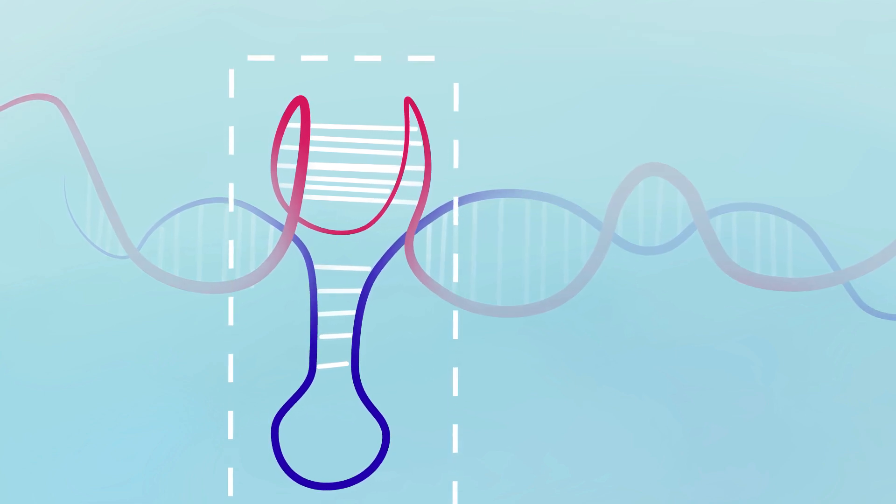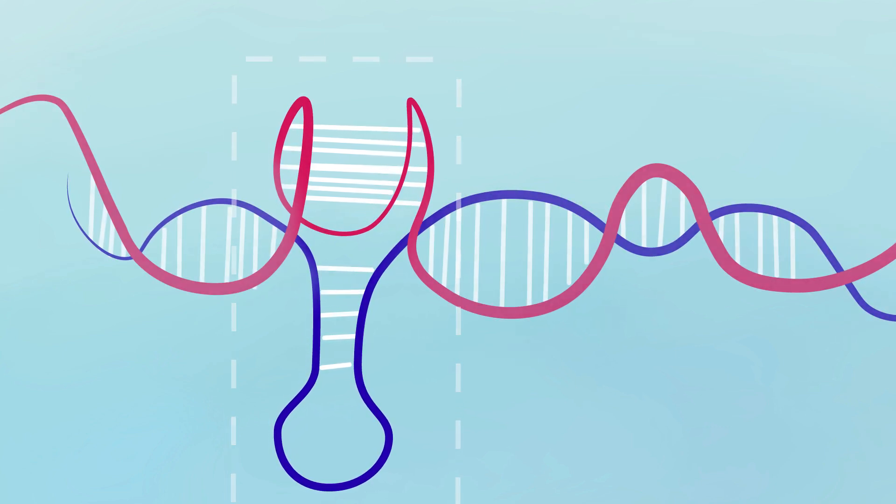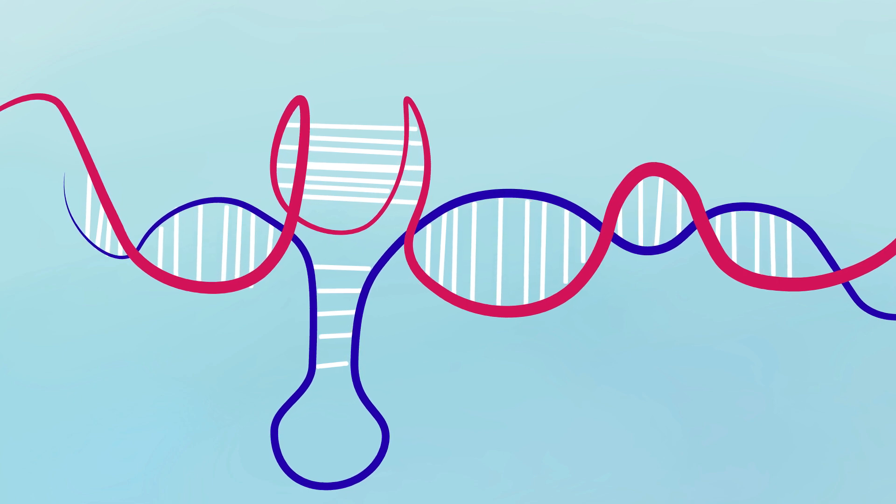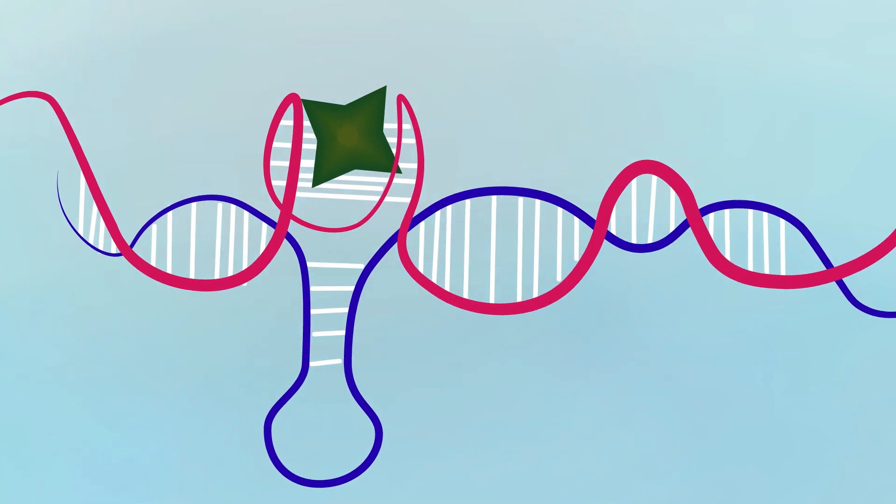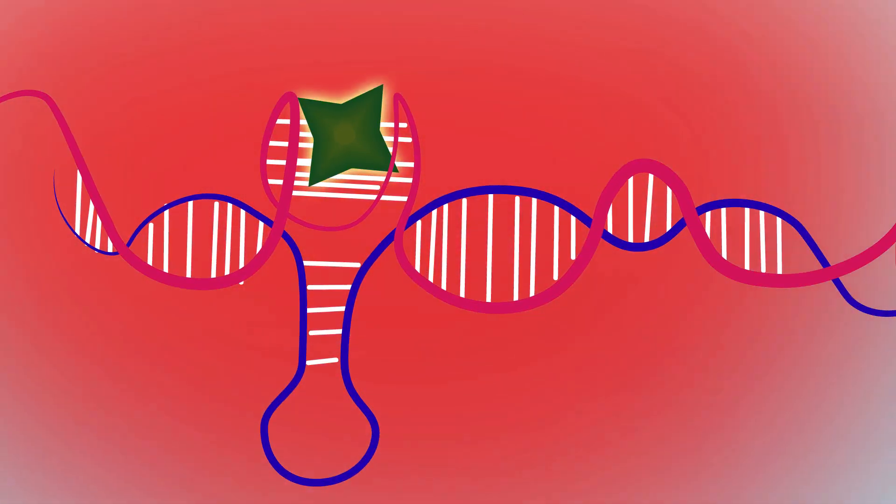The G-quadruplex is a tetraplex structure that holds zinc phthalocyanine, which is a photosensitizer that releases reactive oxygen species when interacting with near-infrared irradiation. These reactive oxygen species destroy the cancer cell.